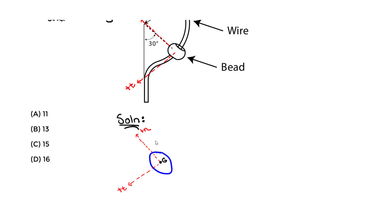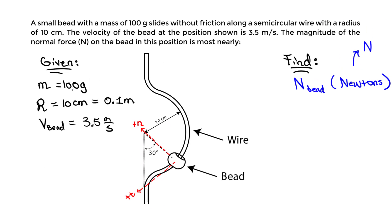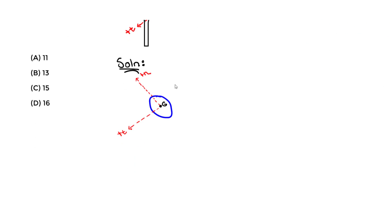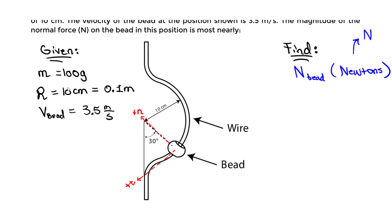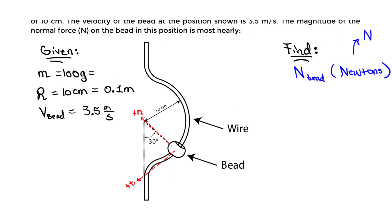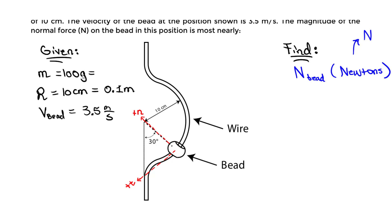In the free body diagram, we're showing external forces. We know that if you have a mass, you have a weight force acting vertically downward — always towards the center of the earth. The weight equals mass times gravity. The mass is 100 grams, and when working with metric units, we always need mass in kilograms. To convert, we divide by 1,000, since there are 1,000 grams in 1 kilogram, giving us 0.1 kg.